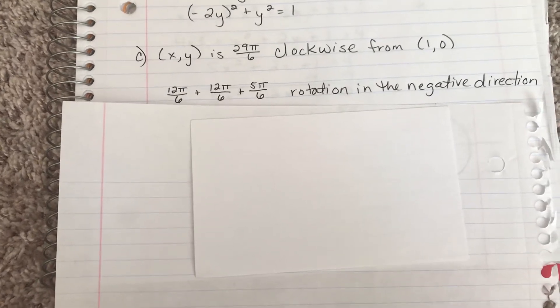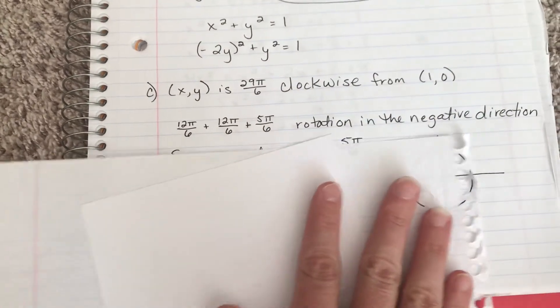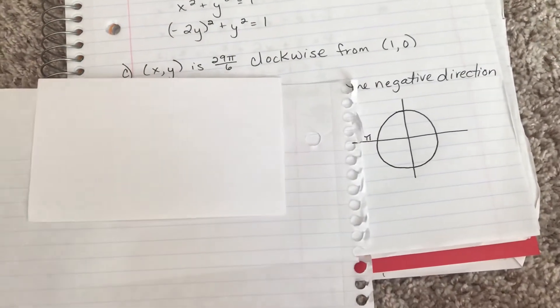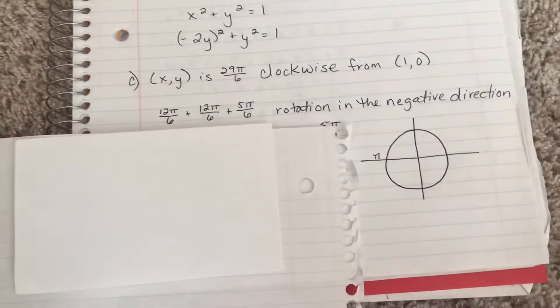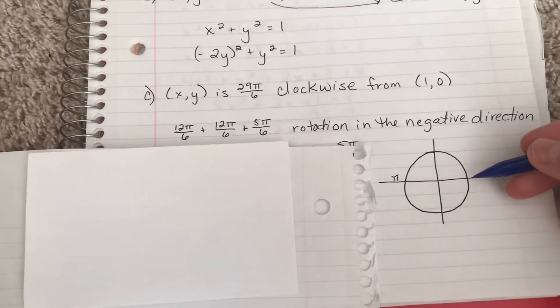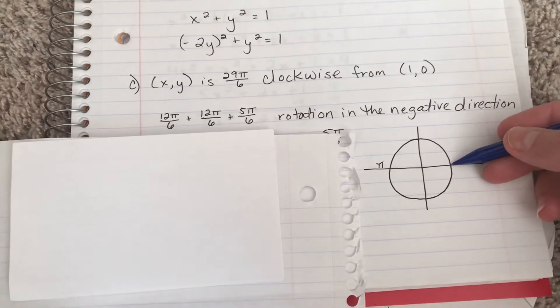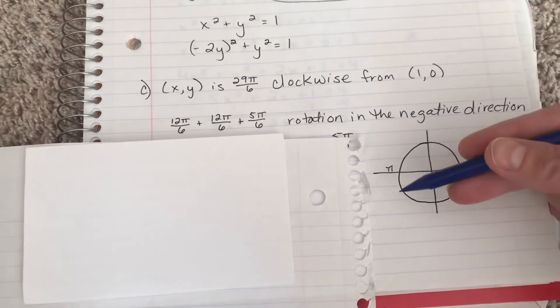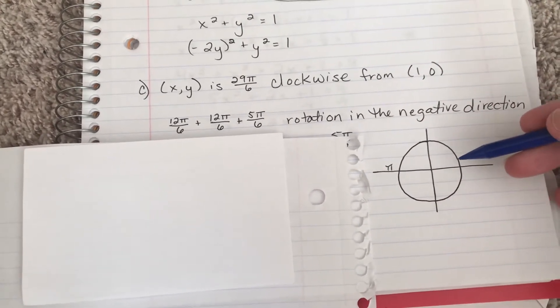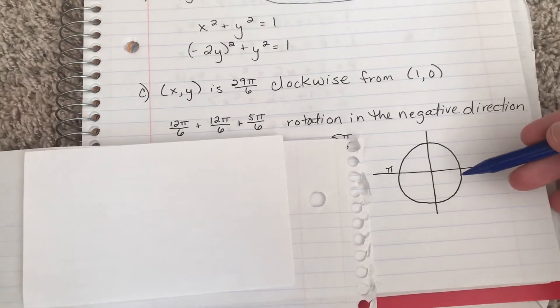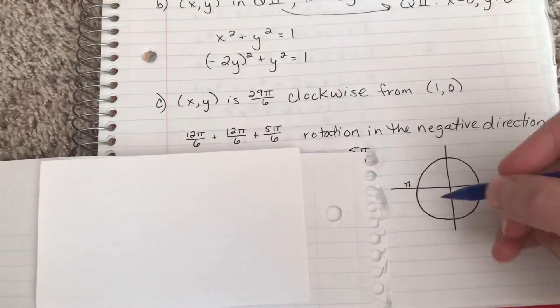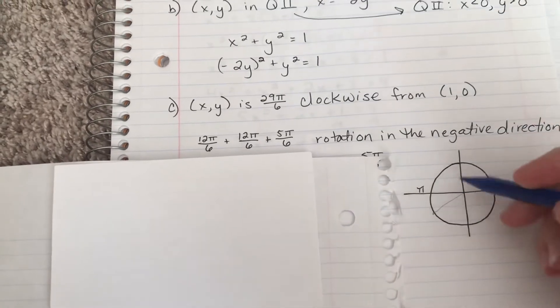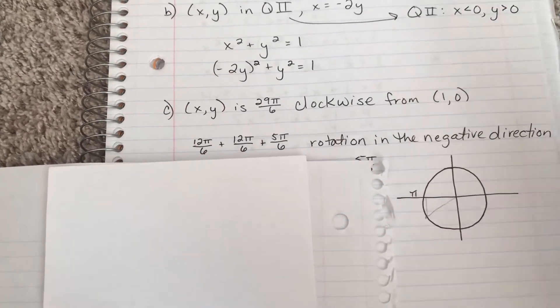And then another 5π/6, but it's going in the negative direction. So as we're coming around the circle, we're starting from the point (1,0) because that's what it told us in the problem. This is where we always start. We've gone around 12π/6, another 12π/6, but then, notice we're going clockwise, we're going 5π/6. So that's going to bring us right about to here.